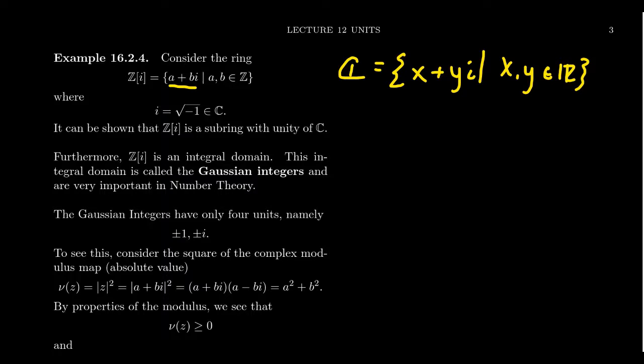It turns out that this is an integral domain for the same reason that the integers are an integral domain. The Gaussian integers form a subfield of C, and so if there was a product of two Gaussian integers that equal to zero, then we'd have a product of two complex numbers which are equal to zero which can't happen because the complex numbers form a field.